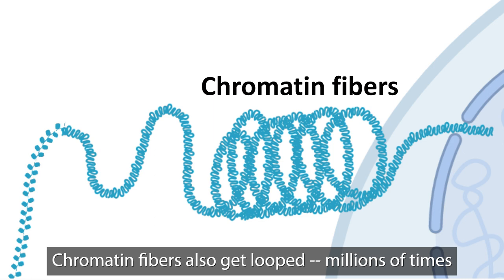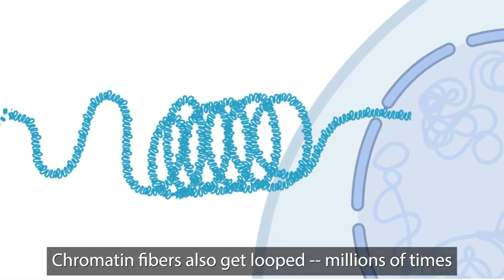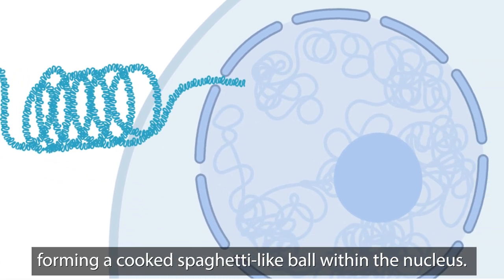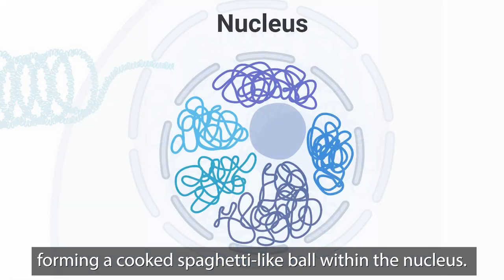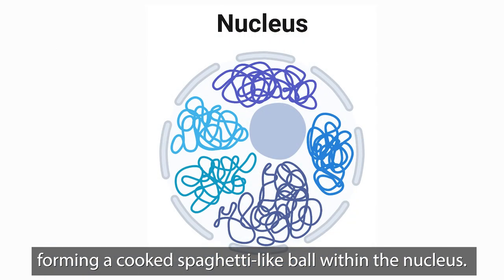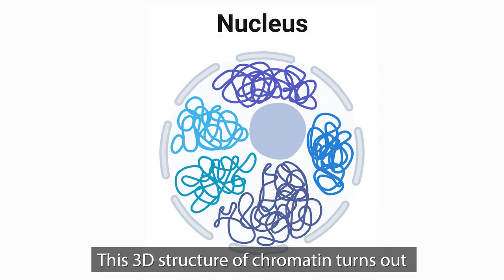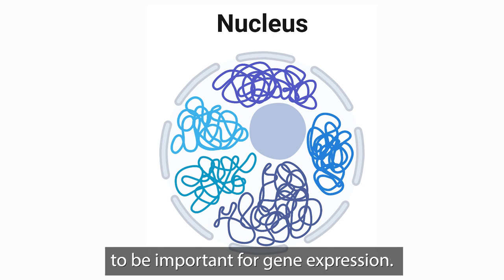Chromatin fibers also get looped millions of times, forming a cooked spaghetti-like ball within the nucleus. This 3D structure of chromatin turns out to be important for gene expression.